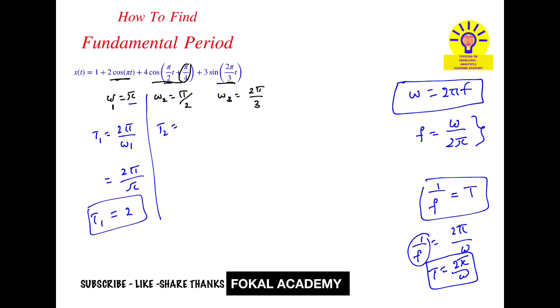From here, T₂ equal to 2π/ω₂. So T₂ equal to 2π divided by π/2. π cancels to become 4. So T₂ equal to 4.